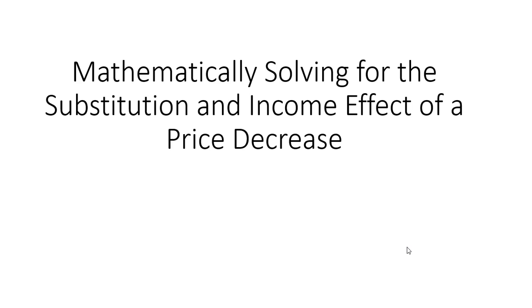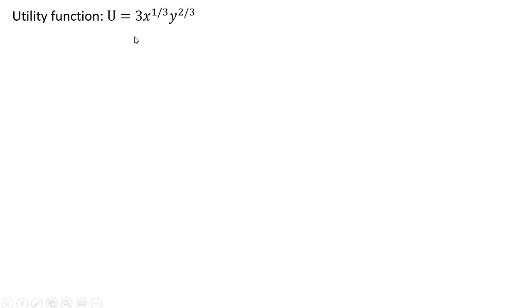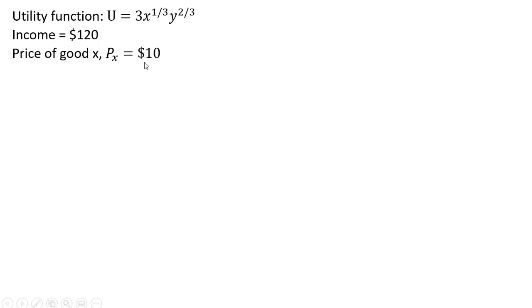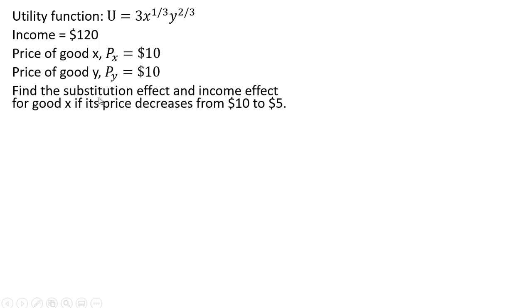Hello. In this video, we're going to be mathematically solving for the substitution and income effect of a price decrease. Here's the consumer's utility function — it is a function of units of good X and units of good Y. The consumer has income of $120, the price of good X is $10, and the price of good Y is also $10. We want to find the substitution effect and income effect for good X if its price decreases from $10 to $5.